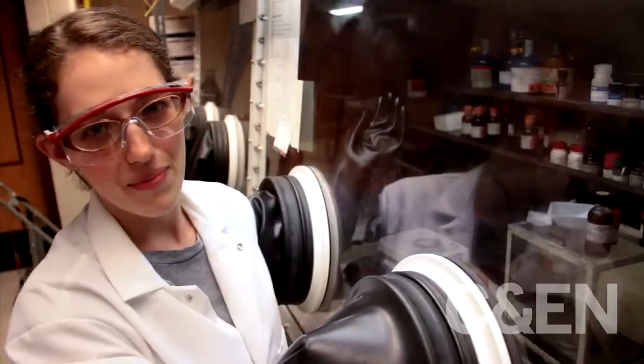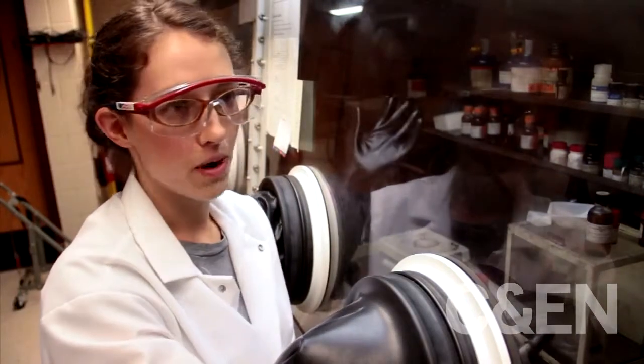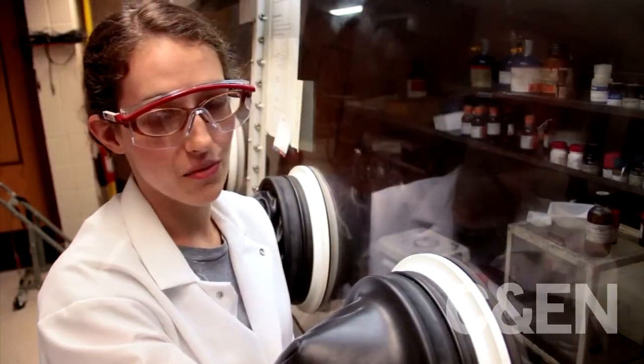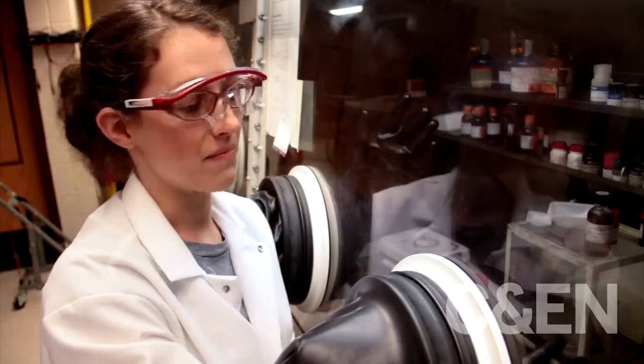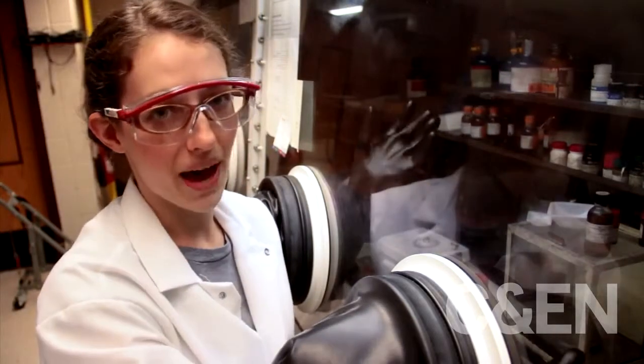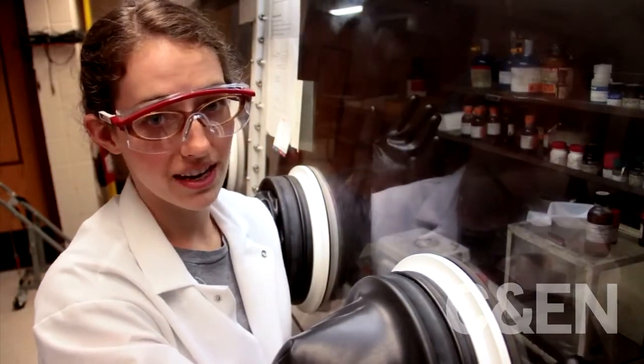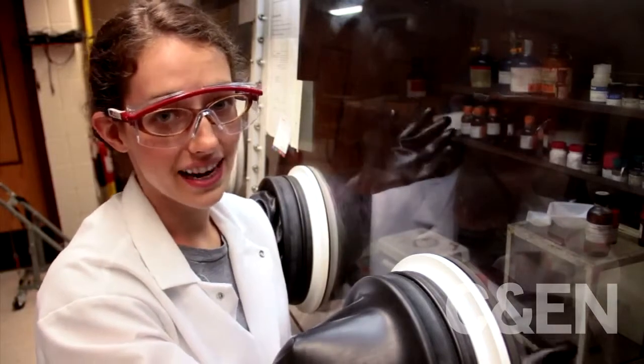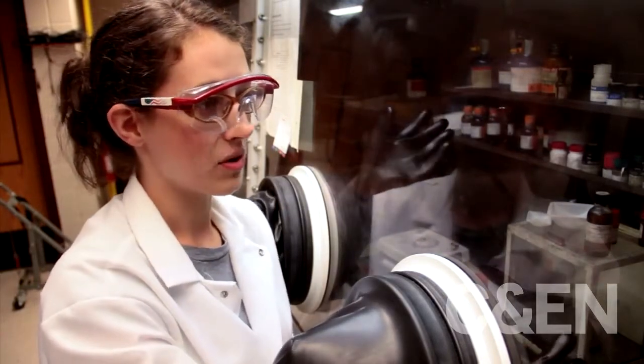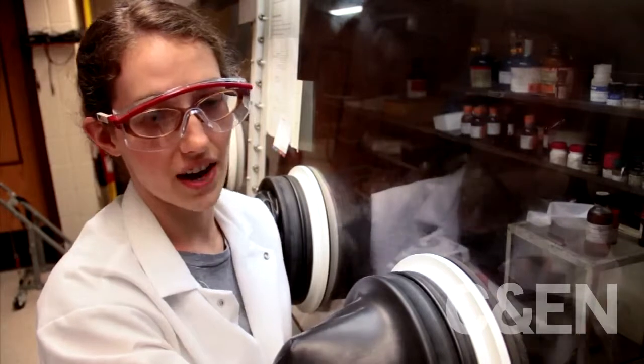So this is a glove box. It's filled with argon and it serves two purposes. The first is to protect us from the chemicals. Some of them give off bad odors that could be harmful to the body, so we keep them in the glove box. And the second is to prevent the chemicals from degrading in the presence of air.